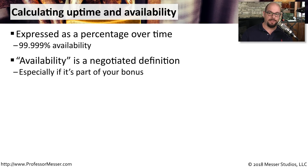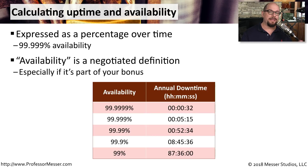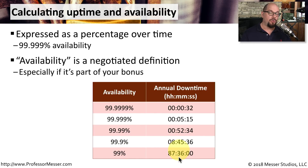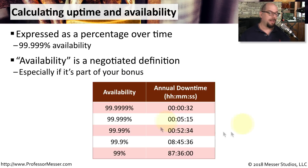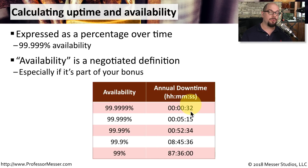These definitions are especially important if availability calculations are part of your salary or an ongoing bonus. Looking at an entire year, a 99% availability means you could be down for a total of 87 hours and 36 minutes. If it is four nines, you only have 52 minutes and 34 seconds of downtime. And if you're working on six nines — 99.9999% availability — your annual downtime cannot exceed 32 seconds.